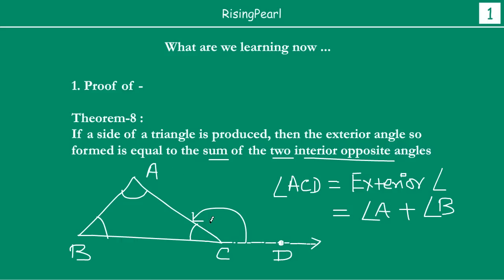Why angle A and angle B? Because if angle ACD is the exterior angle at C, then the interior opposite angles are A and B — you do not take angle C itself. So you take the other two interior angles. Similarly, if you had extended side AC in the other direction, that exterior angle should be equal to angle B plus angle C.